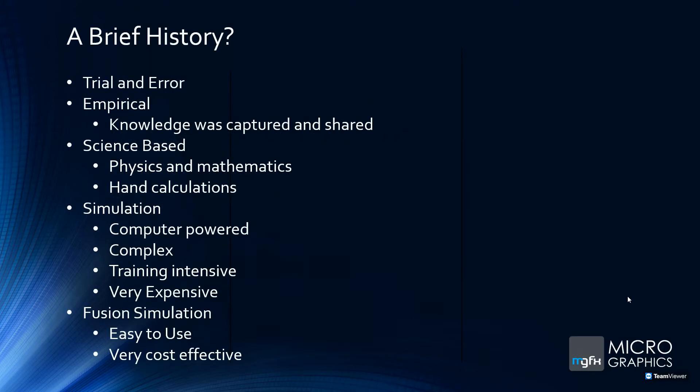A brief history on simulation — or FEA as it's called. Way back in the early days, when people were making things and breaking them, how we simulated something was basically trial and error. I remember when Dad and I built a little go-kart — a plank down the middle, a seat, and wheels on two cross planks with ball bearings. If it broke, we'd see how and where it broke, then beef it up.